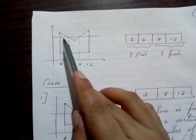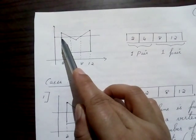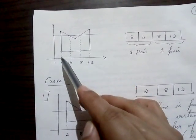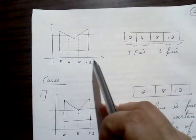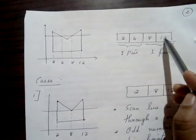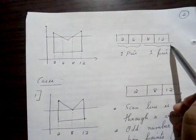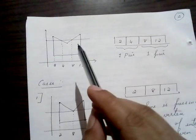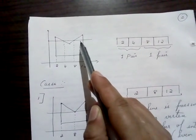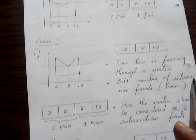Consider a more complicated polygon where a scan line passes through it and produces four intersection points: 2, 4, 8, and 12. All four values are stored in the buffer. Then 2 to 4 becomes one pair and 8 to 12 becomes another pair, so we color all pixels from 2 to 4 and all pixels from 8 to 12.